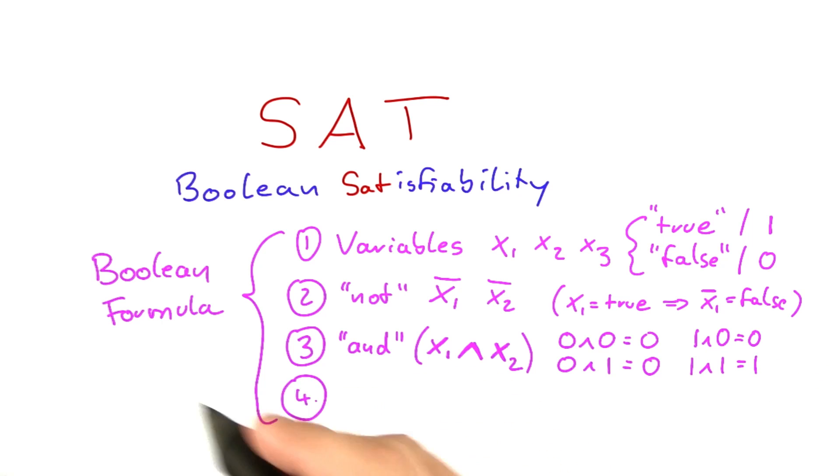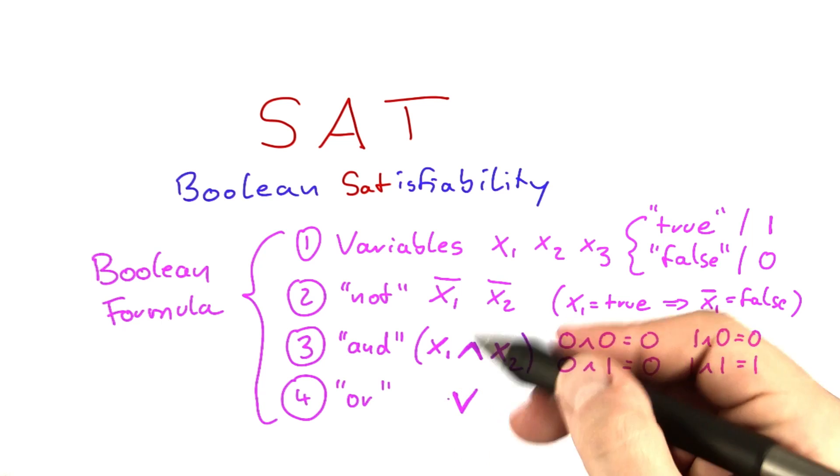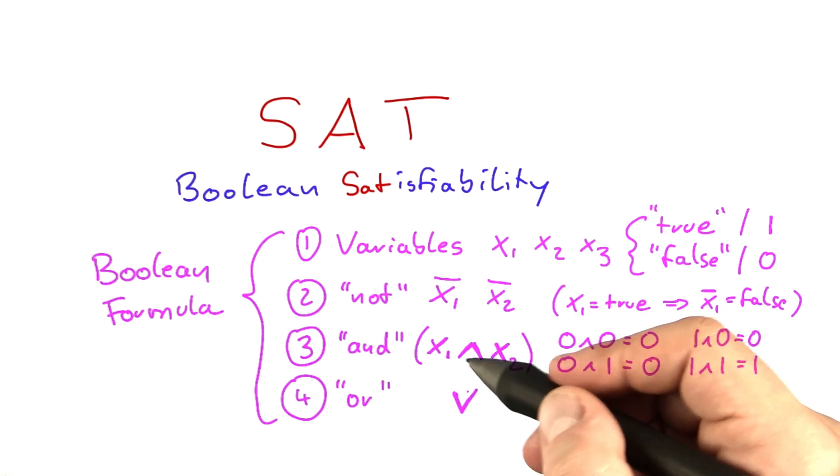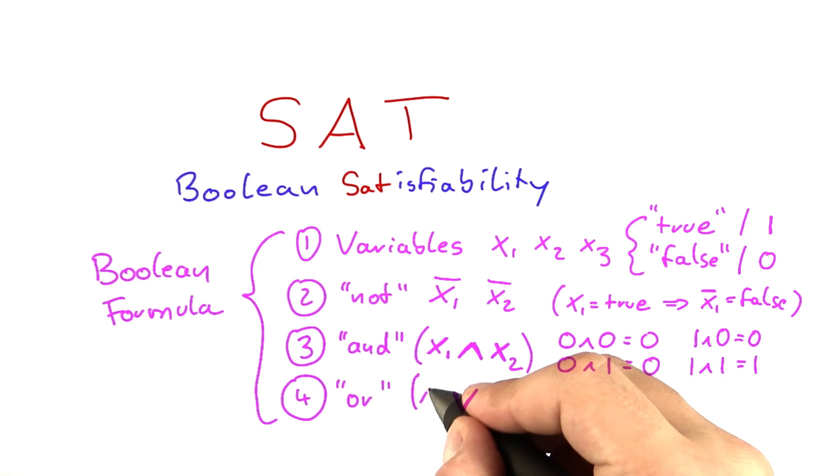The final component of a Boolean formula is another operator called or. Or is written just the other way around, like a flipped and. So it's x1 or x2. As the name suggests, that is set to true or set to 1 if at least one of these variables is set to true.